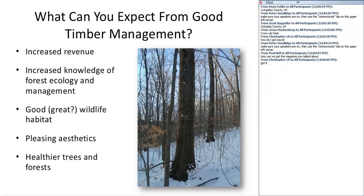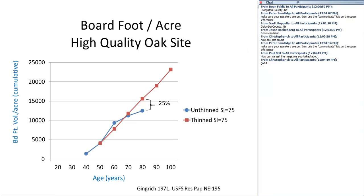One of the spinoffs is an increase in volume. This is a simple example from some data in the 1970s by the U.S. Forest Service, looking at oak saw timber volume growth on thinned and unthinned sites. It's at a site index of 75 — a measure of how tall trees would be at a certain age. Site index 75 means oak trees would be 75 feet tall at a base age typically of 50, and it's a way to gauge the quality of the site.